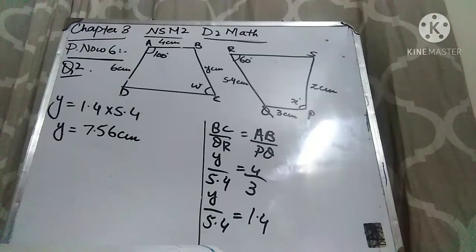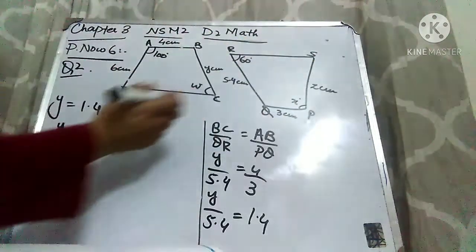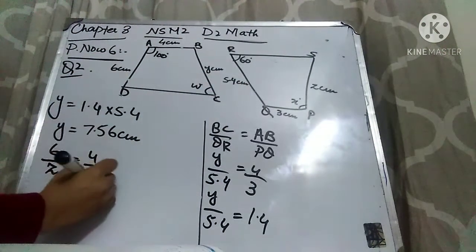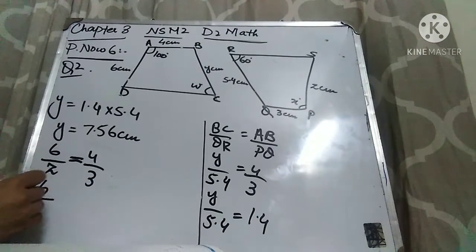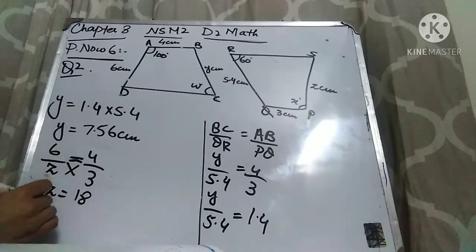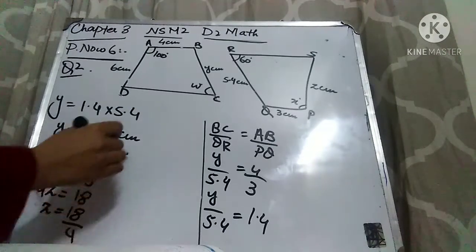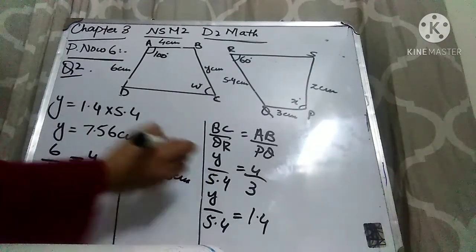Now we find the last variable Z. AD and SP are corresponding sides. So AD/SP equals the same ratio: 6/Z = 4/3. Cross multiplying: 4Z = 18. Dividing both sides by 4 gives Z = 18/4 = 4.5 cm. So the value of Z is 4.5 cm.